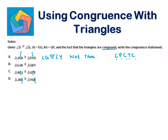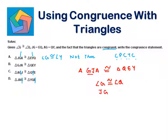Now look at the B part: Triangle GJA congruent to triangle QEY. Here we can say angle G is congruent to angle Q, which is given. JG is equal to EQ, which is also correct. And the third condition given is AG, and AG is equal to YQ, which we can also say is equal to QY. So all the conditions are satisfied in the B part, so we can highlight B as our answer.